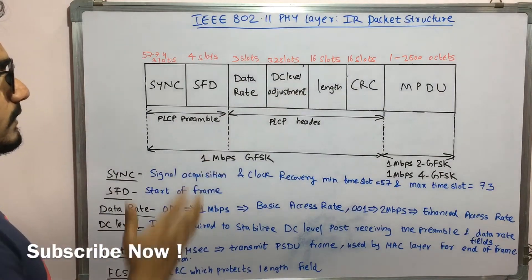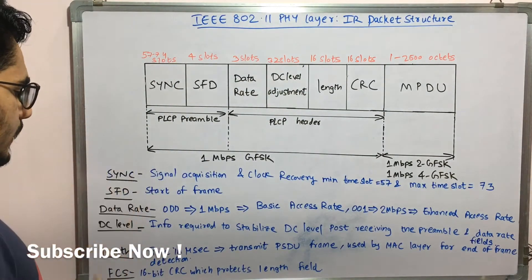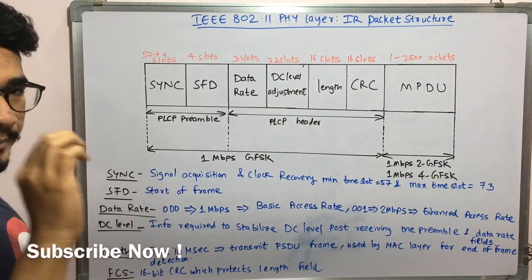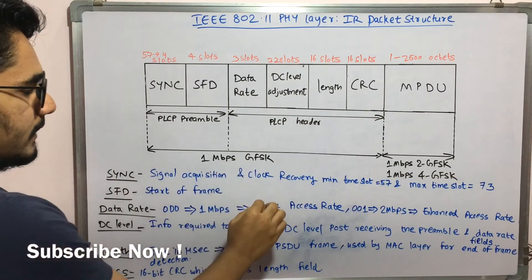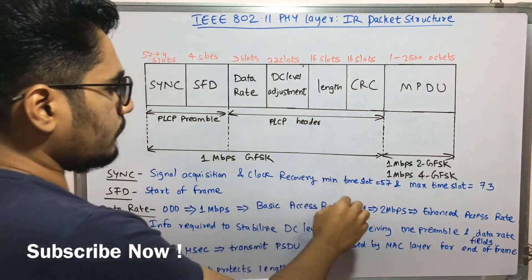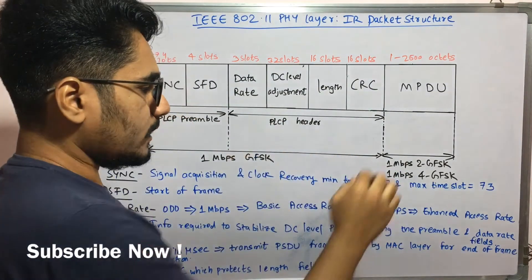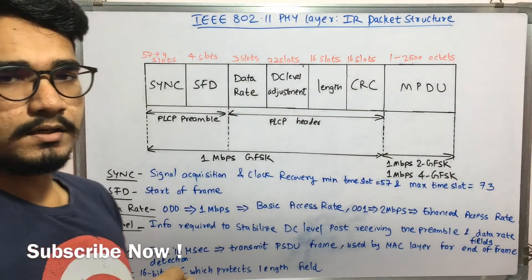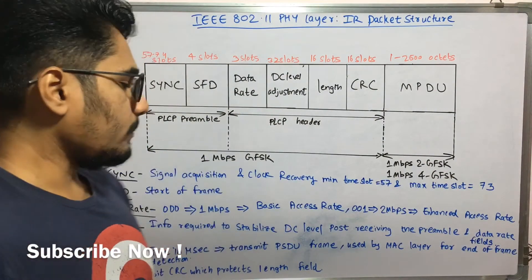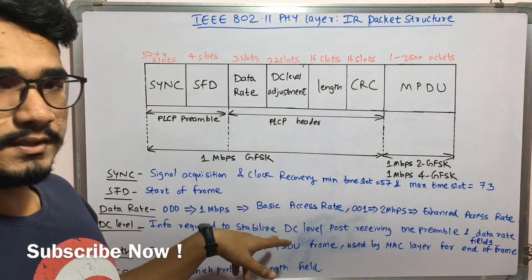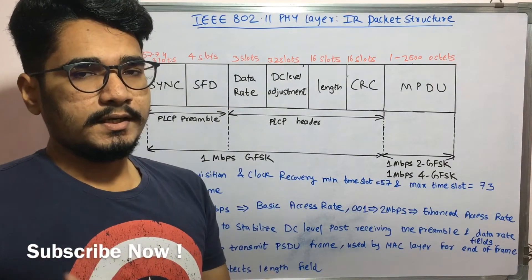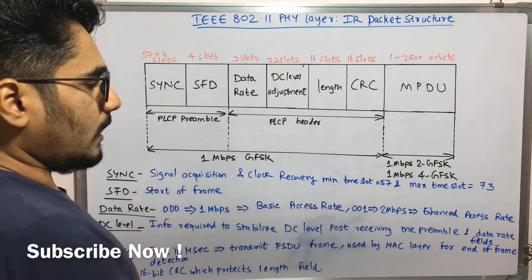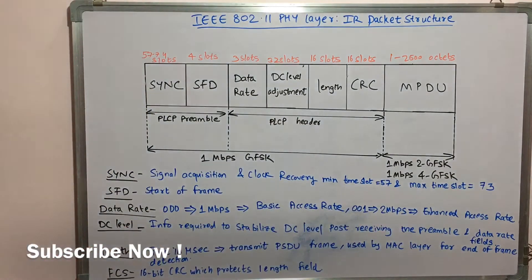Moving towards the right, we have three slots dedicated for the data rate. The data rate is represented in two forms: triple zero (000) represents 1 Mbps speed, which is the basic access rate; and double zero one (001) is at 2 Mbps, which is for the enhanced data access rate. If you want to send data at lower bandwidth use the basic access rate, and for high-speed transmission at 2 Mbps use the enhanced data rate at 001.